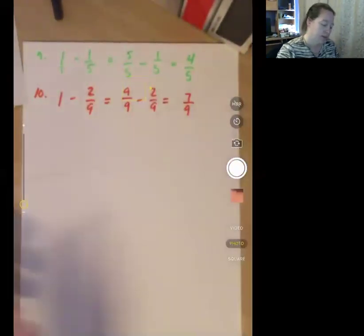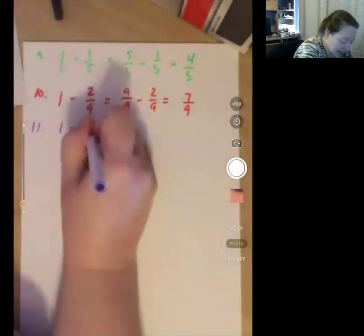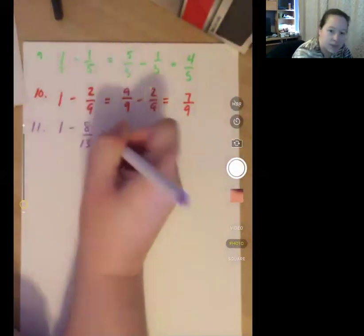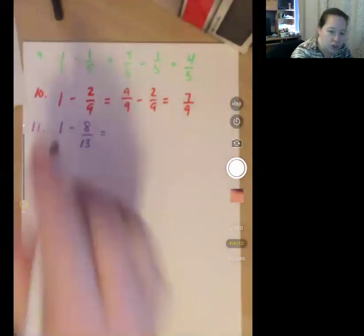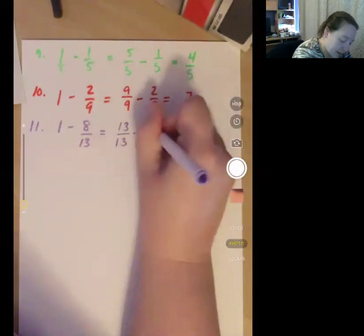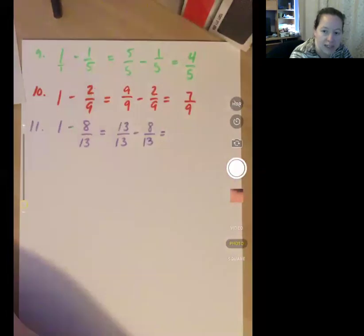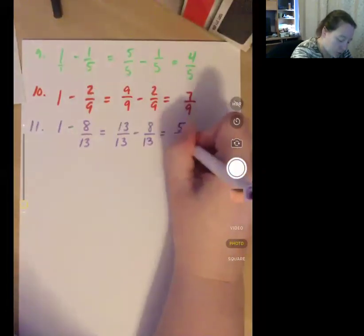Number 11, 1 minus 8 thirteenths. So I'm going to change that 1 to a 13 over 13 minus 8 thirteenths. 13 minus 8 is 5 over 13.